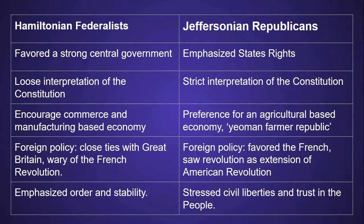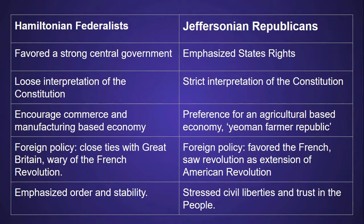Next is their difference on the direction the economy should take. Hamiltonians felt that the U.S. should go the route of the British and emphasize commerce and manufacturing, while the Jeffersonians preferred an agricultural-based economy — Jefferson called it a yeoman farmer republic. In foreign policy, they could not be more different. The Hamiltonians favored the British as a source of stability and because of a common heritage, despite the ill will over the recent Revolutionary War, while the Jeffersonians favored the French, signaling both France's support of the American Revolution and their belief that the French Revolution was an extension of the American Revolution.